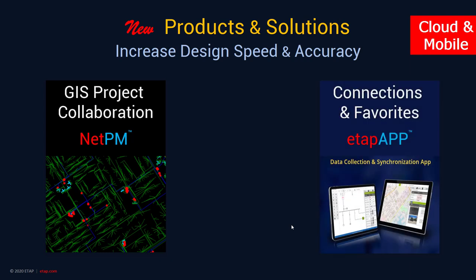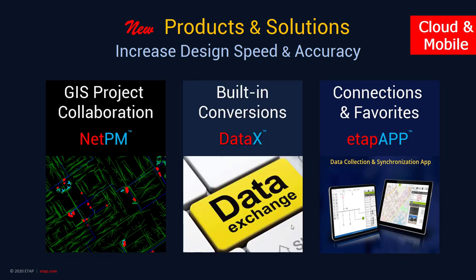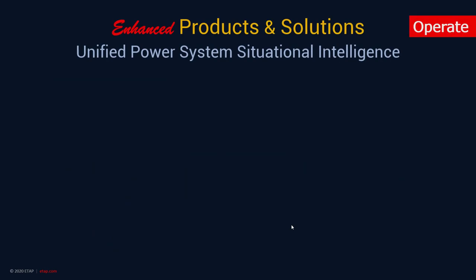The ETAP app for mobile field data collection and synchronization has also been enhanced. ETAP app version 4.0 now offers increased accessibility to ETAP projects for data collection, verification, and synchronization. Field engineers can use ETAP app 4.0 to build one-line diagrams, enter information, and validate their power system network faster than ever before. Through data exchange, we've enhanced conversion tools and provided new conversions from legacy software into ETAP.